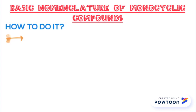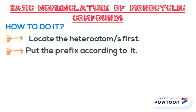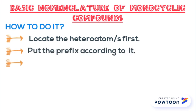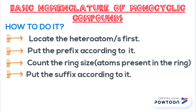First rule: we need to locate the heteroatoms in the structure, and according to that, we need to add the corresponding prefix. Next, we need to count the ring size — in other words, the number of atoms present in the ring — and add the suffix corresponding to that ring size.